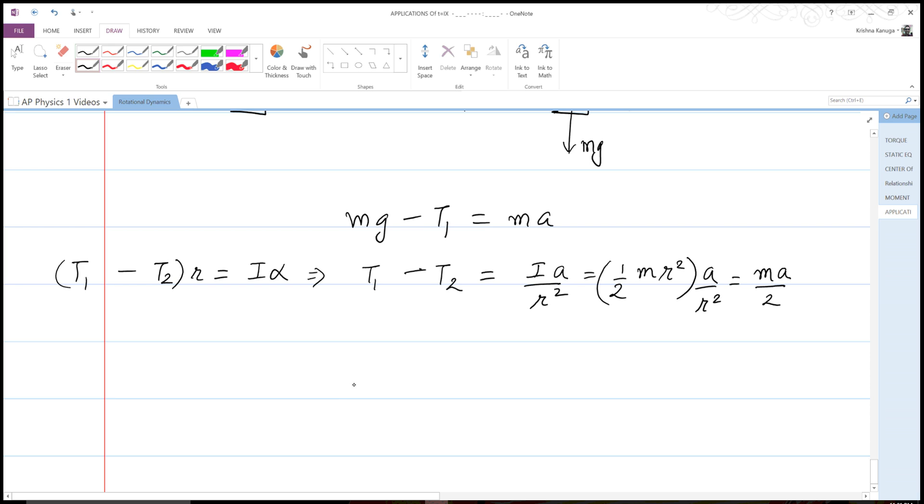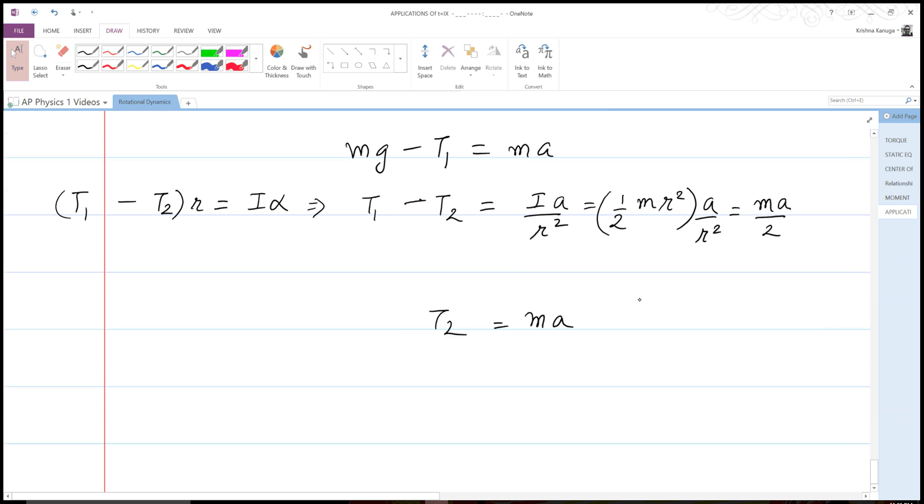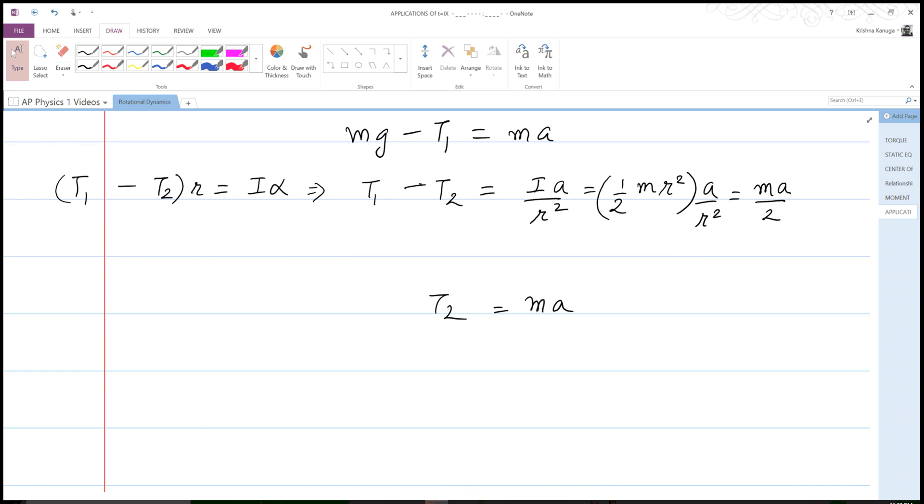And then I have my third equation, which is T2 equal to ma. So these are my three equations. Let's add them all up. I already eliminated alpha, so I don't have to deal with it.